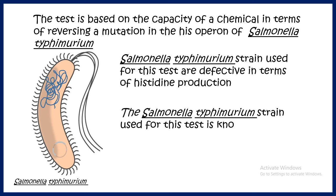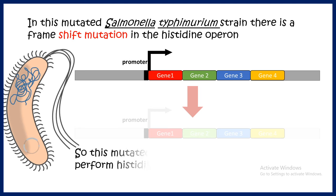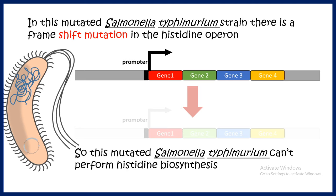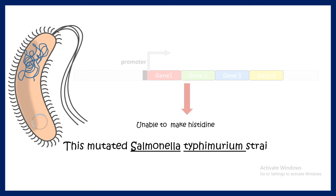The tester strain has many other mutations as well, but in the histidine operon it has point mutations and frameshift mutations. Because of these frameshift and point mutations in the histidine operon, the genes cannot be expressed and histidine cannot be synthesized. As a result, you need to supplement histidine in the media, otherwise these bacteria won't even grow.